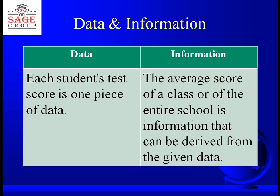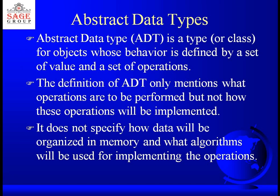For example, each student's test score in a class is just a piece of data. But if I talk about the average score of a class or of the entire school, then that is information. If you have a subject like maths and 60 students are there in your class, roll number 1 scored 50, roll number 2 scored 75, roll number 3 scored 86 — that is of no use. But if I say the average score of 37 students in maths is 75 percent, you can draw some inference. So whenever we process raw data, we convert it into information because we are able to draw some conclusion from it.